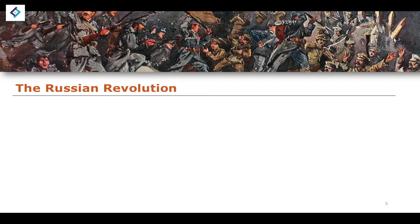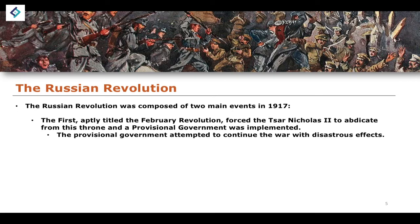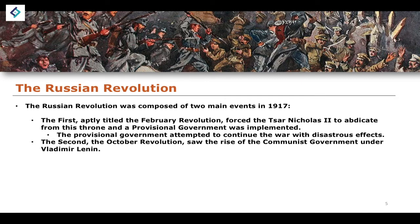What was more significant and successful for the German forces was the Russian Revolution. The Russian Revolution comprised two main events within 1917. Firstly, the February Revolution, where Tsar Nicholas II was forced to abdicate from his throne and a provisional government was implemented. The provisional government attempted to run the Russian Empire alongside the Petrograd Soviet, and tried to continue the war with a new offensive. However, this was a disastrous idea, ultimately leading to the second part of the Russian Revolution, sometimes known as the October Revolution.